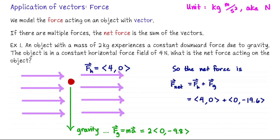Now we just do a basic vector sum. So it's 4, 0, plus 0, negative 19.6. Therefore the net force acting on this object can be represented as the vector 4, negative 19.6.